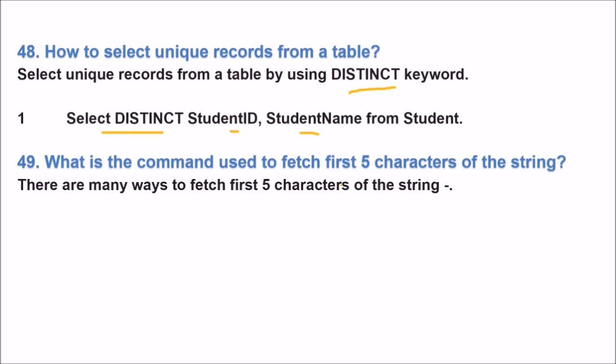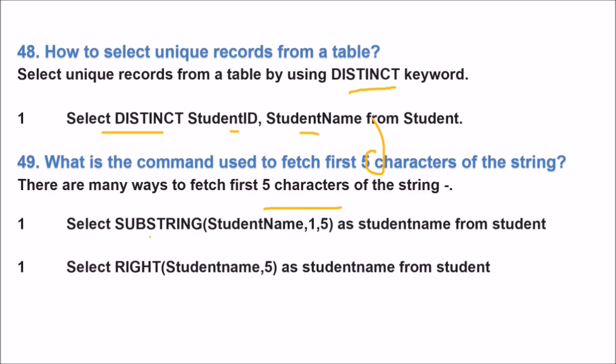What is the command used to fetch first five characters from the string? You have a string. You want to fetch the first five characters. So there are many ways to fetch five characters from the string. You can have a substring function like student name comma one comma five AS student FROM student. These are all imaginary column name and the table name. The other option to choose the five character will be write student name comma five AS student FROM student. So this will be fetching the first five characters from the string.